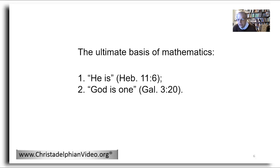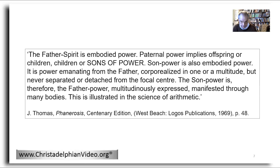God is at the very foundation of mathematics. As a starting point, any account of the basis of mathematics must acknowledge that it is axiomatic that God is. Furthermore, the Bible says that God is one, and given that God is from everlasting to everlasting and does not change, the number one has always had an application, at the very least to God himself. In Phanerosis, Brother Thomas talks about numbers in relation to God. His prime concern is to use arithmetic to illustrate God manifestation, but what he writes is useful for considering mathematics itself.